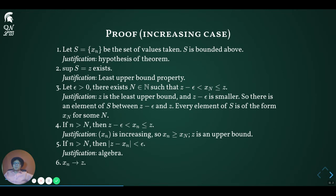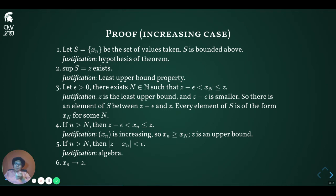Let's give a proof in the case where the sequence is increasing. The proof when the sequence is decreasing is similar and follows the same idea. We start by forming the set S consisting of the values taken by the sequence x sub n. We notice that the set S is bounded above, because the original sequence is bounded above, meaning every element of the sequence is less than some number m, and hence the set formed by the elements is also bounded above. Since this set is bounded above and non-empty, it has a supremum, which we call Z. This is due to the least upper bound property.